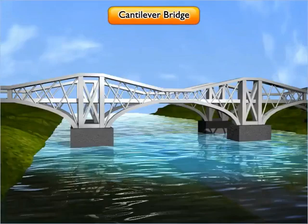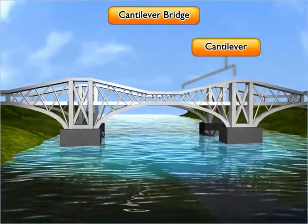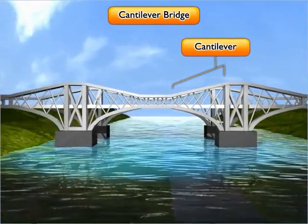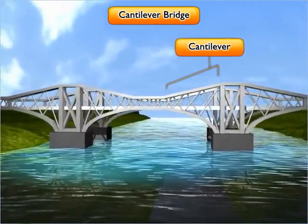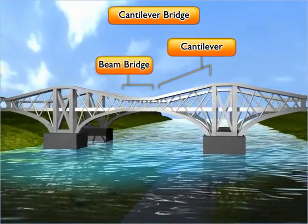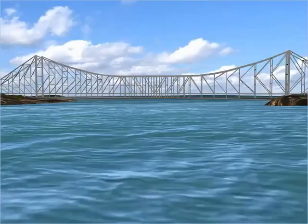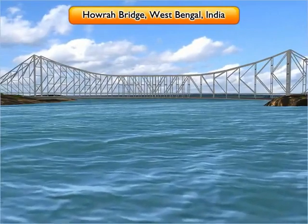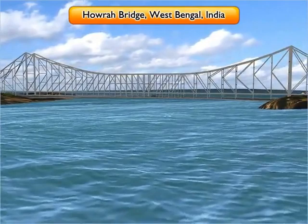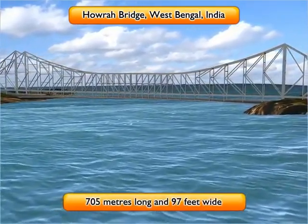The cantilever bridge is built using cantilevers, which are horizontal beams supported on only one end but unsupported at the other, like diving boards. Cantilever bridges normally use pairs of cantilevers back-to-back with a short beam bridge in between the cantilevers. The Howrah Bridge in West Bengal, India, is the busiest cantilever bridge in the world. It's built over the river Hooghly and links the cities of Howrah and Kolkata. It's 705 meters long and 97 feet wide.